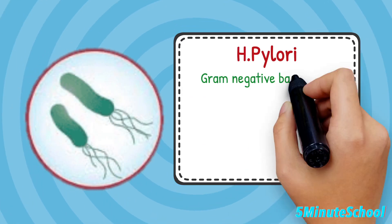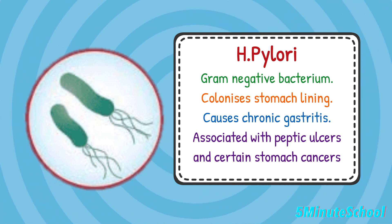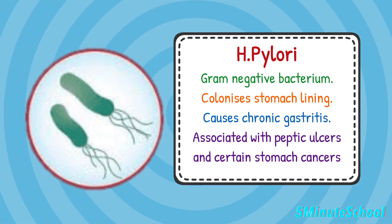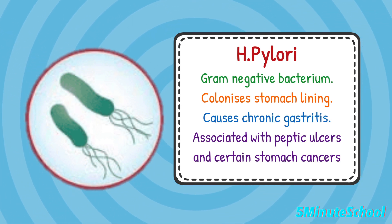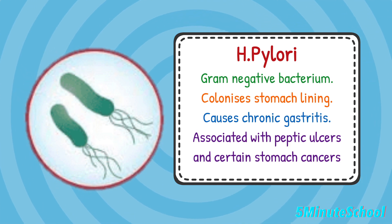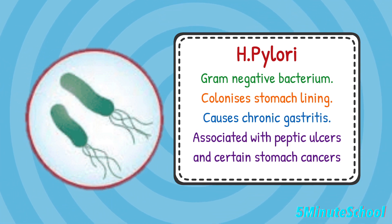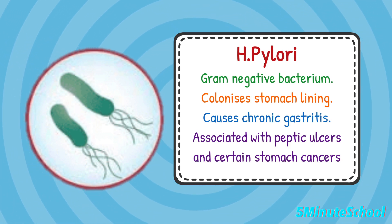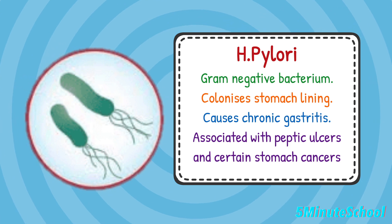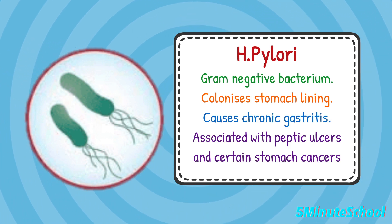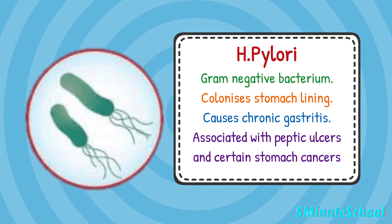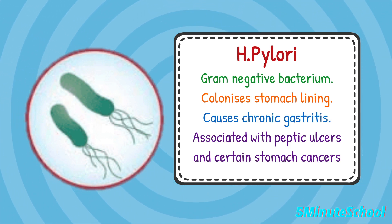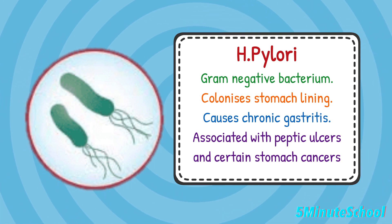Helicobacter pylori, often referred to as H. pylori, is a gram-negative bacterium that primarily colonizes the stomach lining. It's a major cause of chronic gastritis, which is inflammation of the stomach lining, and it's associated with peptic ulcers and certain types of stomach cancer.